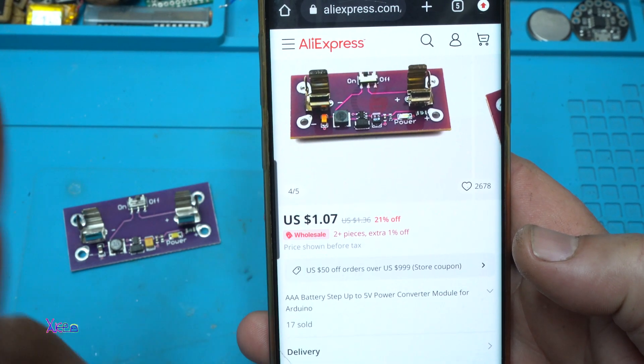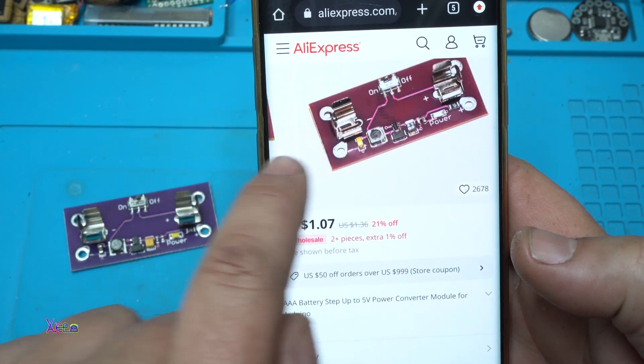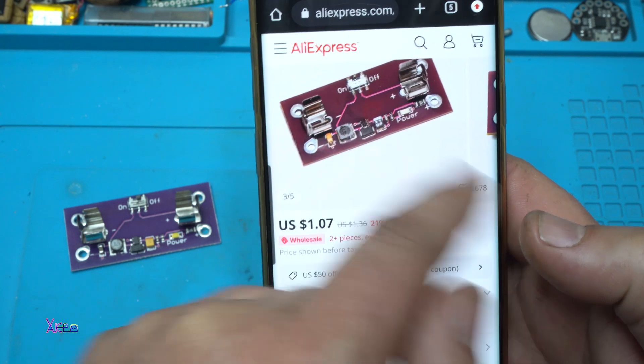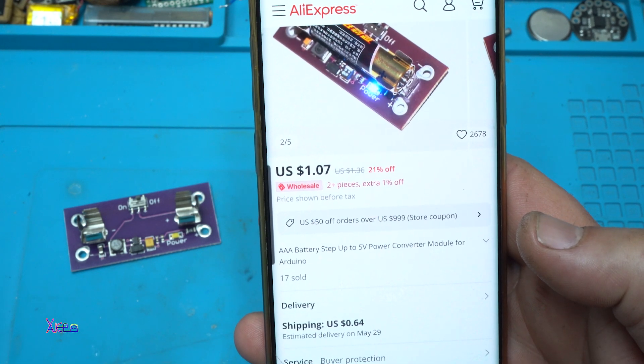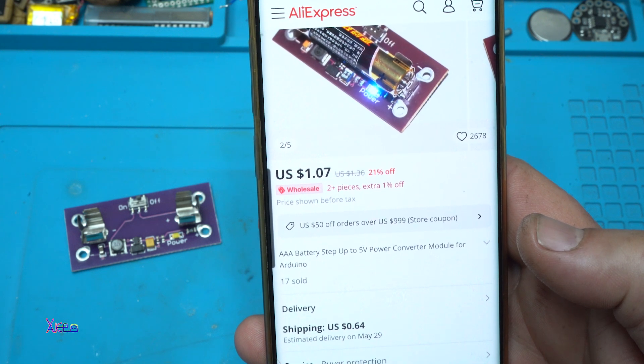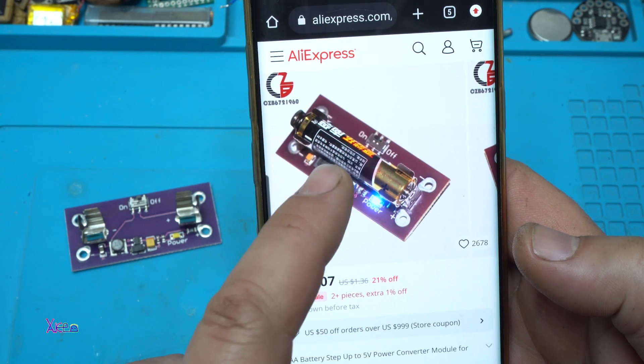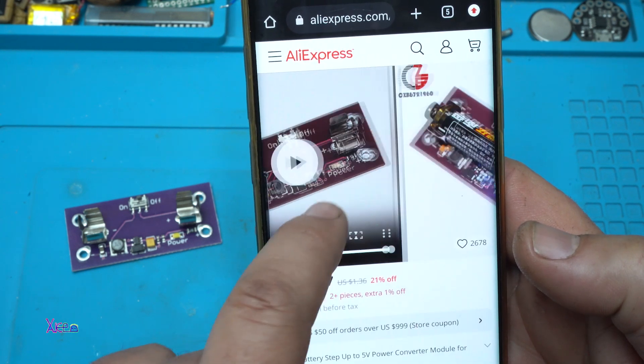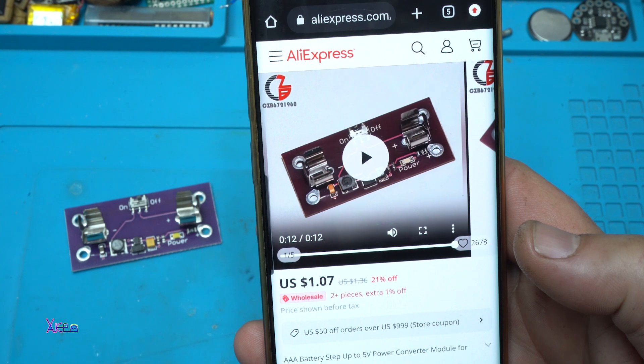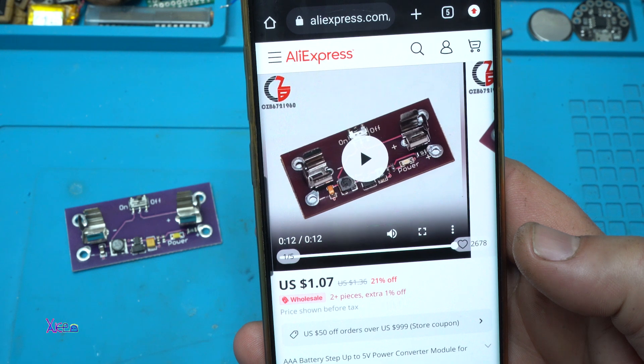It costs $1 if you order from AliExpress. It's a AAA battery step up to 5 volt power converter module for Arduino. So it's a small boost PCB board that converts 1.5 volt to 5 volts. Let's test it.